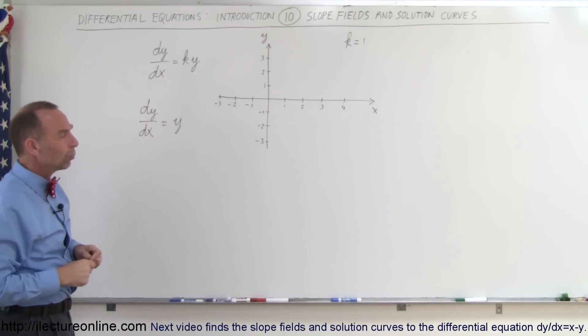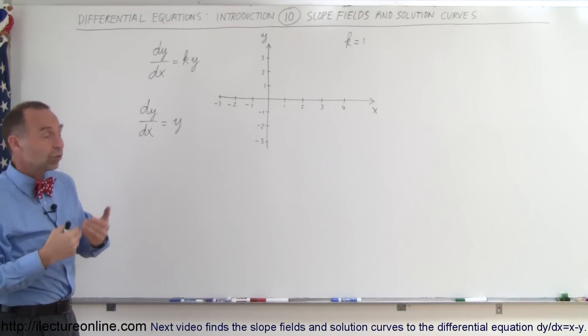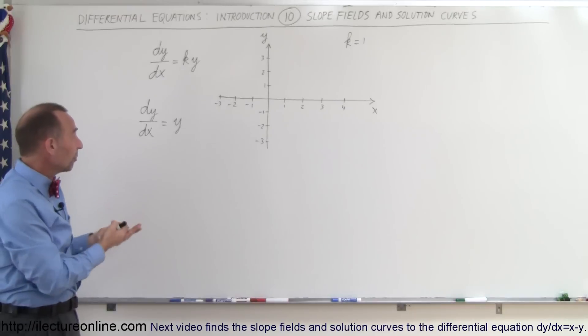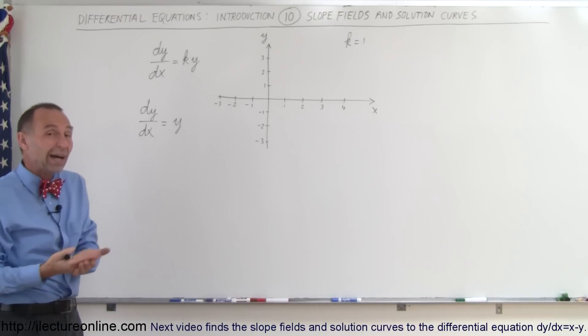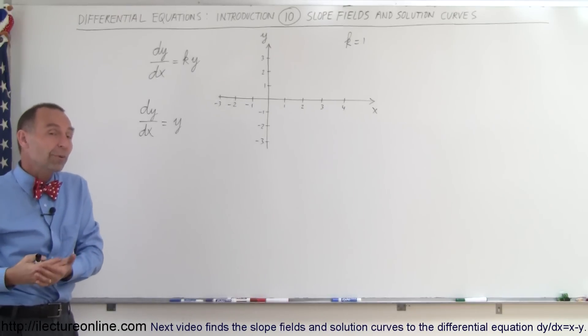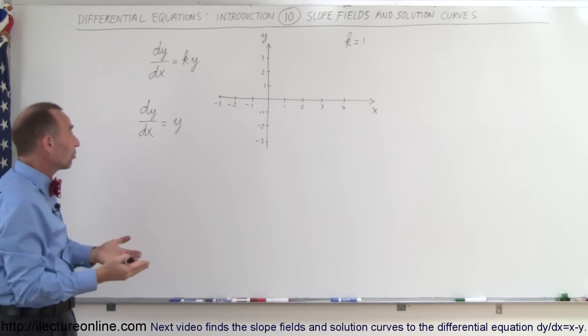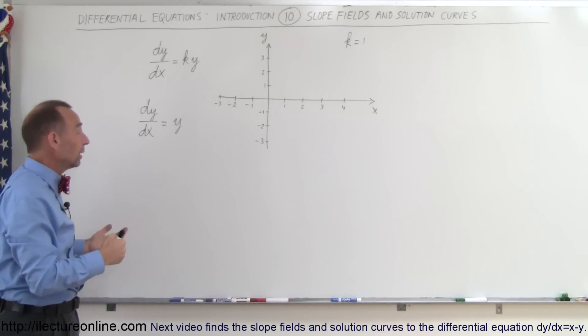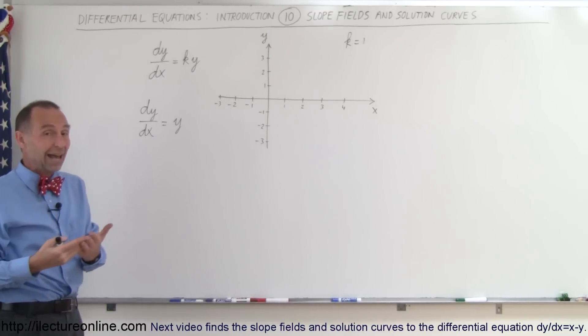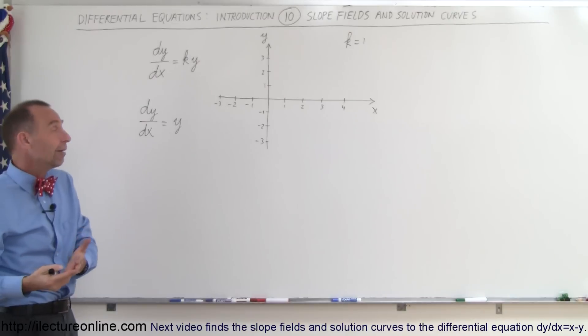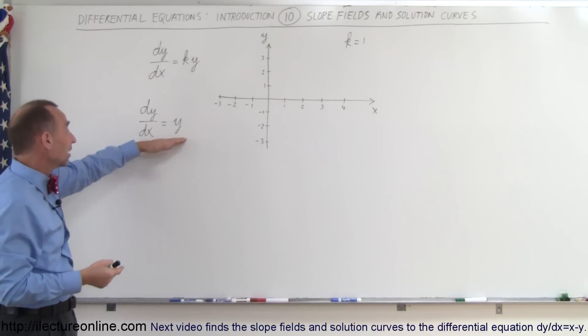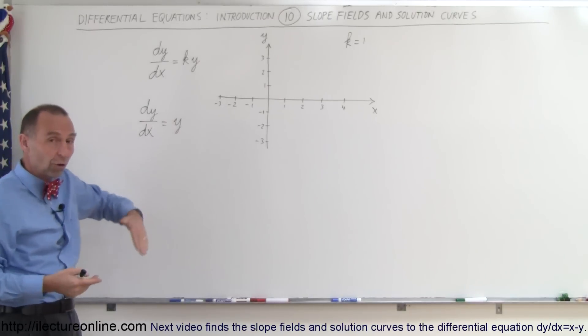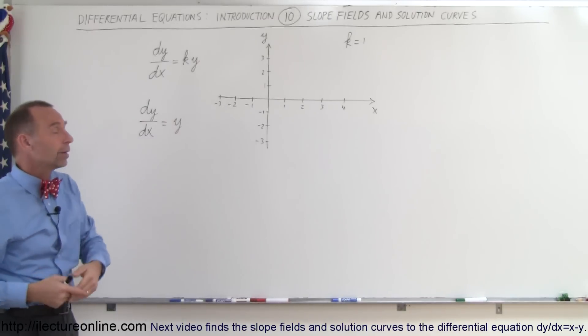That means when y is 1, the slope is 1. When y is 2, the slope is 2. When y is 3, the slope is 3. When y is 1 half, the slope is 1 half. And if y is a negative number, the slope is a negative quantity.